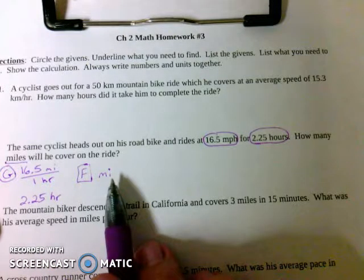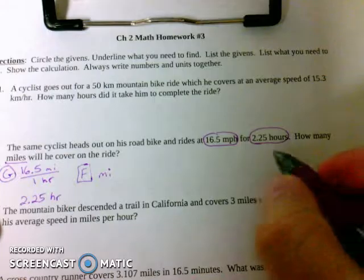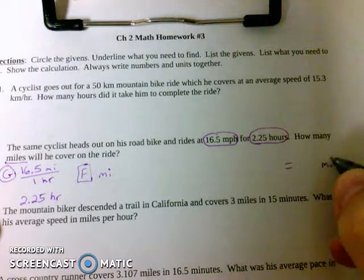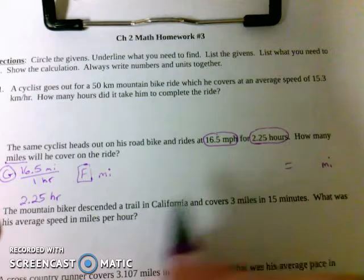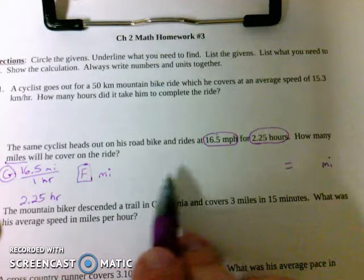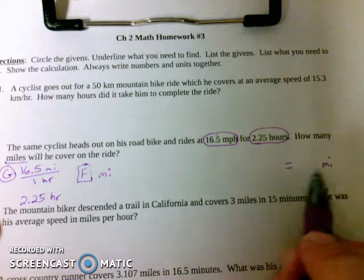Once you've identified your givens, you circle them. Identify what we're trying to find. You write a line under it. List your givens. Go ahead and write a G for given. Put a circle around it. List your givens. Use your abbreviations for your givens. Write the number and units together. So 16.5 miles per hour, 2.25 hours.